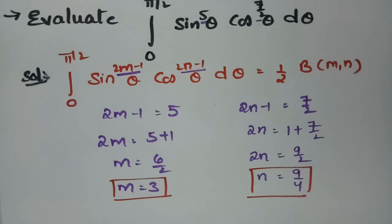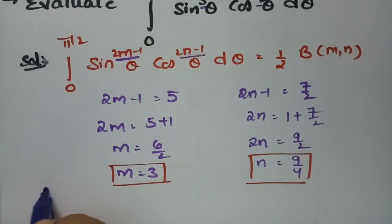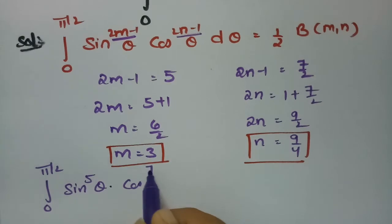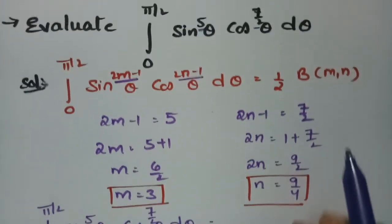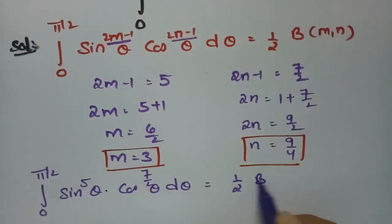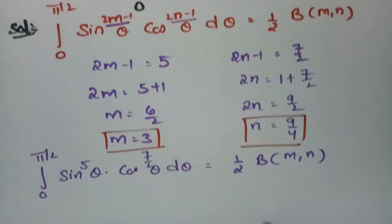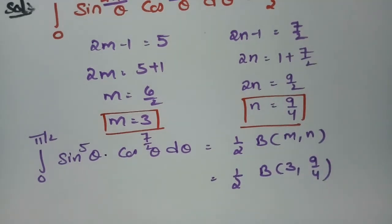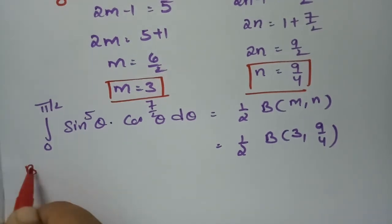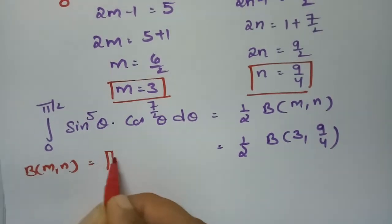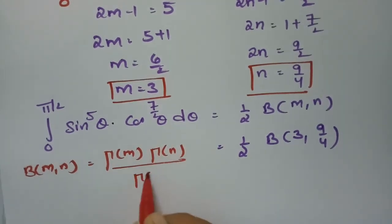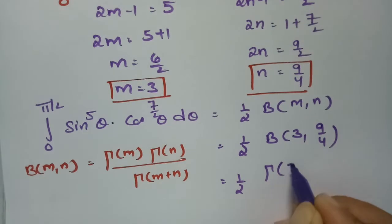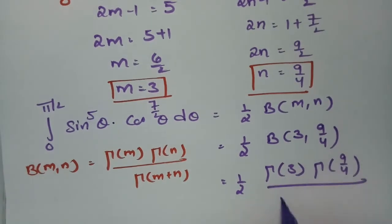The integral from 0 to pi/2 of sine^5 theta times cos^(7/2) theta d-theta equals one-half times beta(m, n), with m = 3 and n = 9/4. Using the important relation between beta and gamma functions — beta(m, n) = gamma(m) times gamma(n) divided by gamma(m + n) — we substitute to get gamma(3) times gamma(9/4) divided by gamma(3 + 9/4).